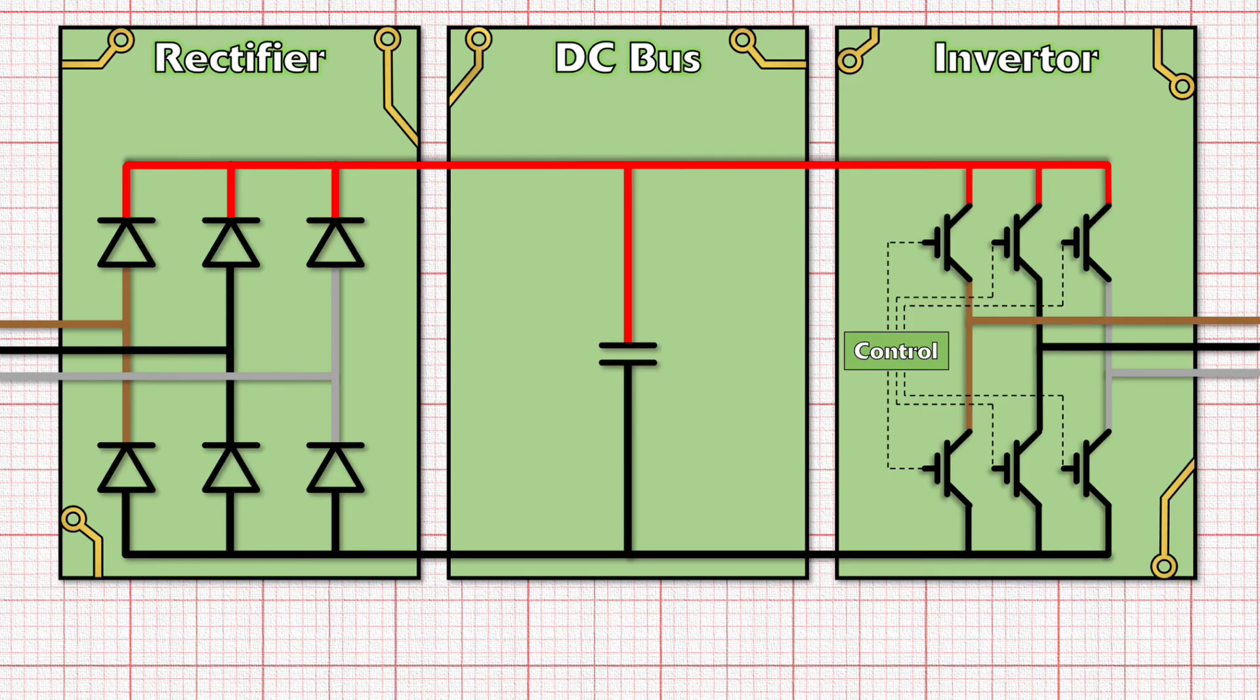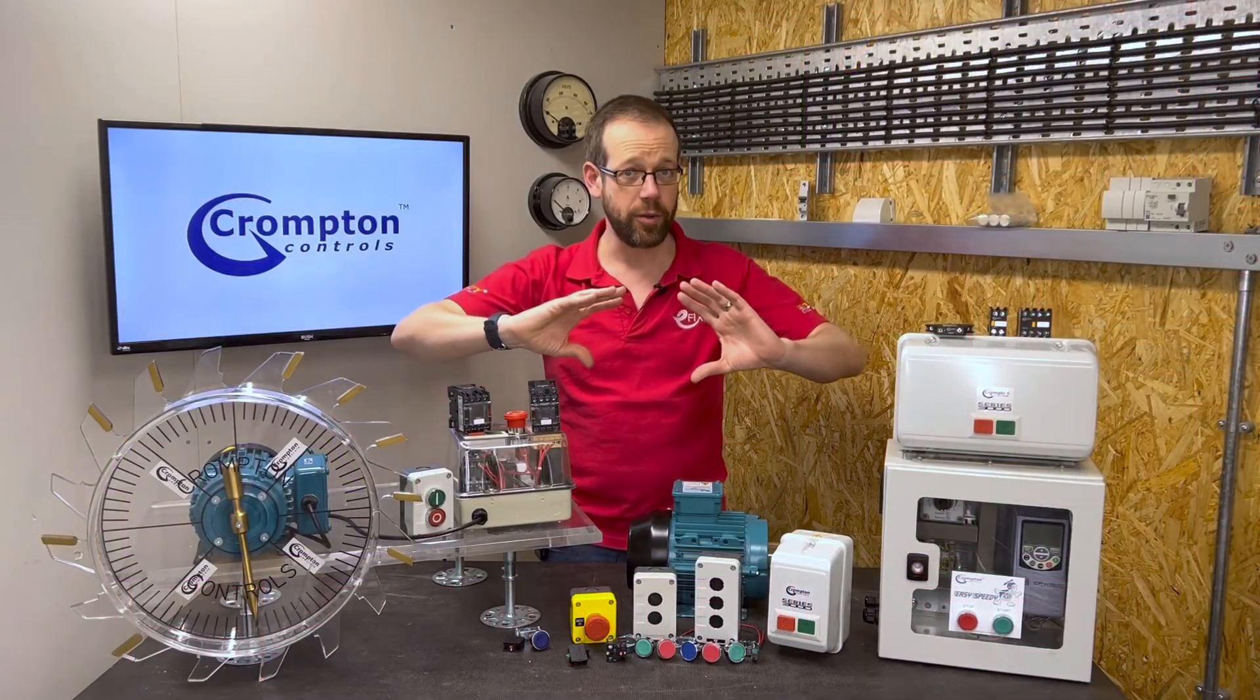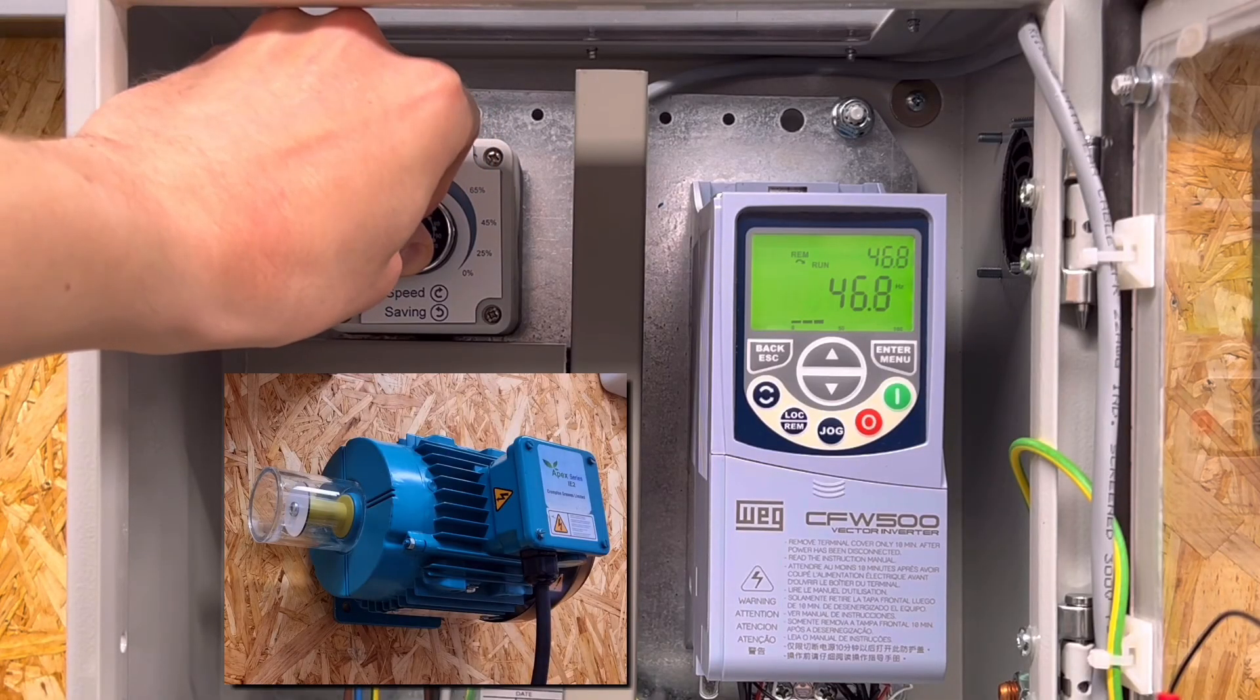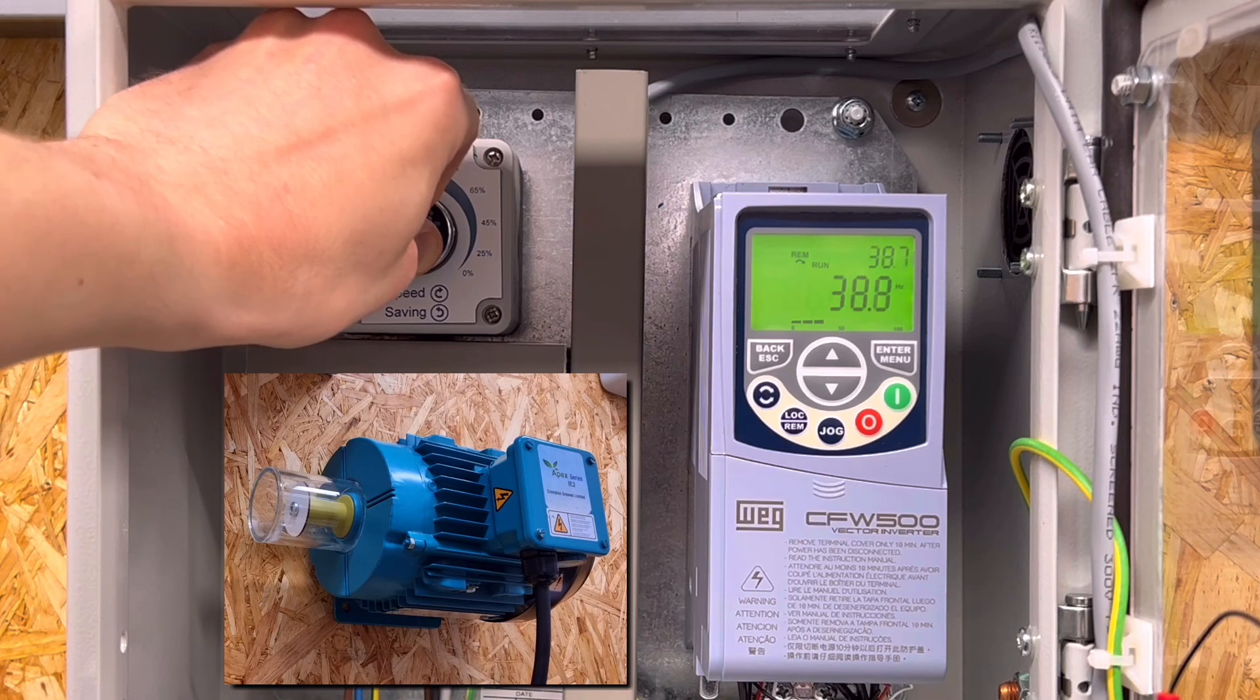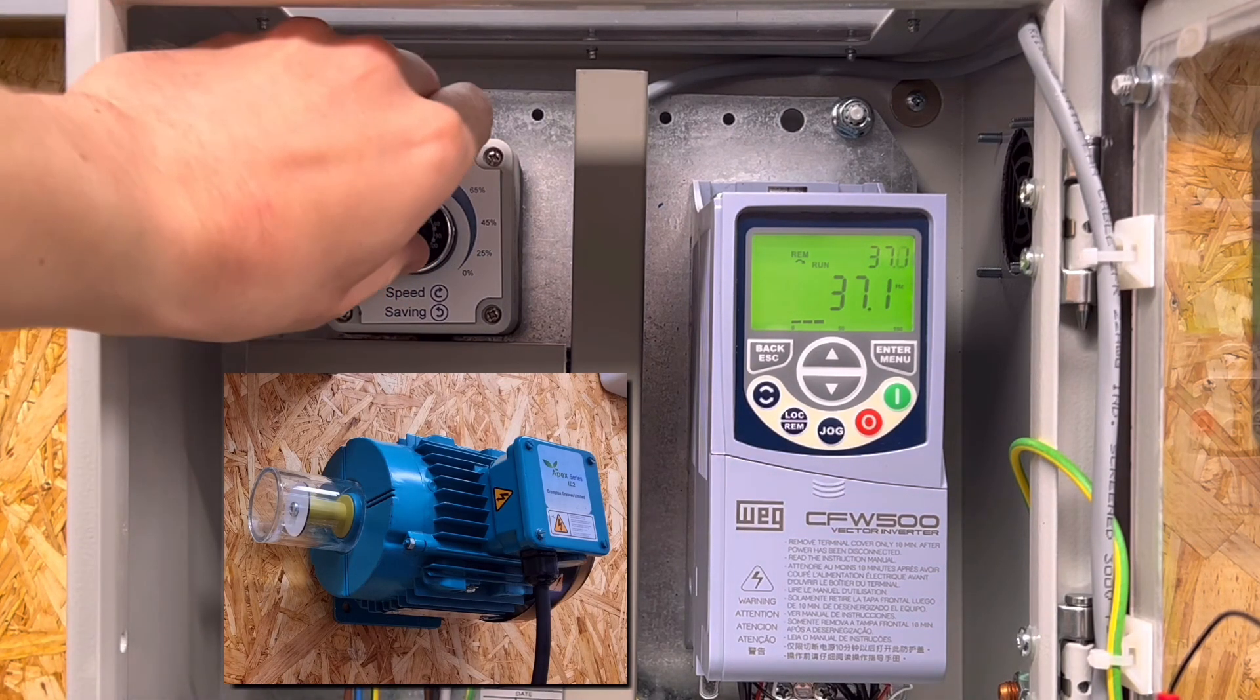And remember, in the first part of the video we said the speed at which the magnetic field in the motor turns depends on the frequency of the three-phase supply. So by varying the frequency of the output from the drive, we can control the speed of the motor.